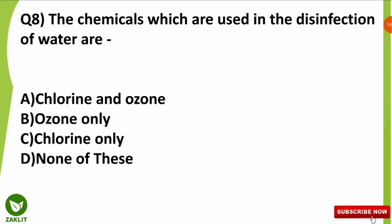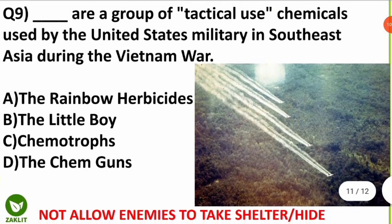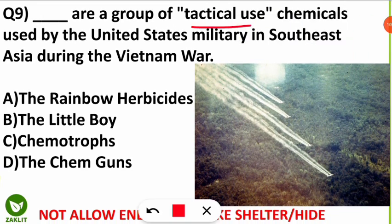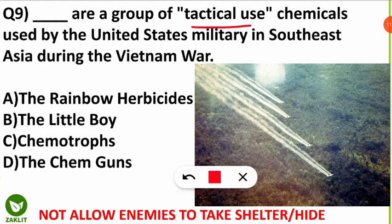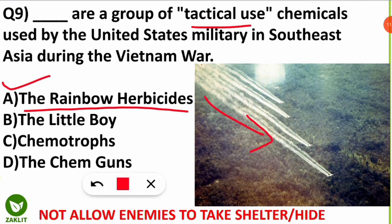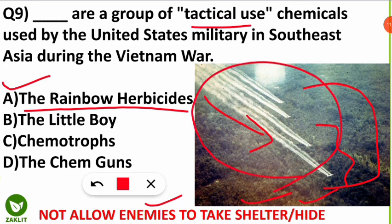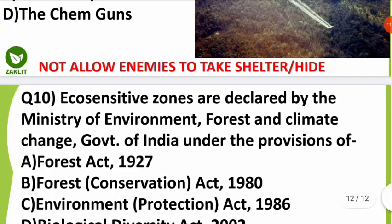The ninth question was very interesting: DAS are a group of tactical-use chemicals used by the United States military in Southeast Asia during the Vietnam War. The correct option is the rainbow herbicides. As seen in this picture, herbicides were sprayed from US aircraft over Southeast Asian forest cover where enemies were taking shelter. In order to deny shelter and hiding places, the US military sprayed rainbow herbicides, causing all the trees to die.